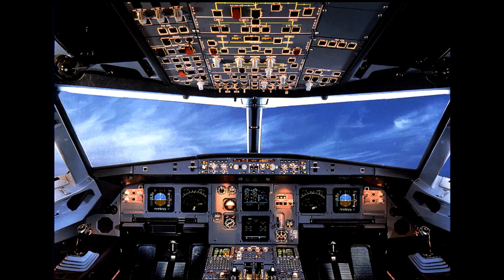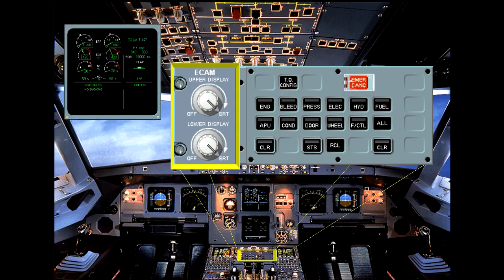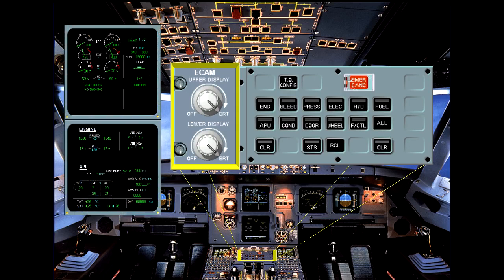Below the ECAM displays on the center pedestal is the ECAM control panel. The two controls on the left-hand side are to adjust the brightness of the two ECAM screens or to turn them off. We will look at the rest of the controls on this panel in more detail later.